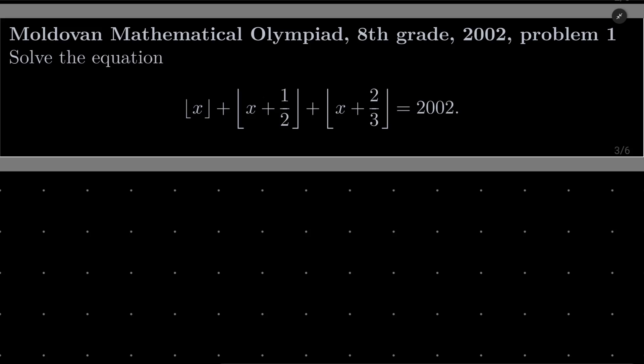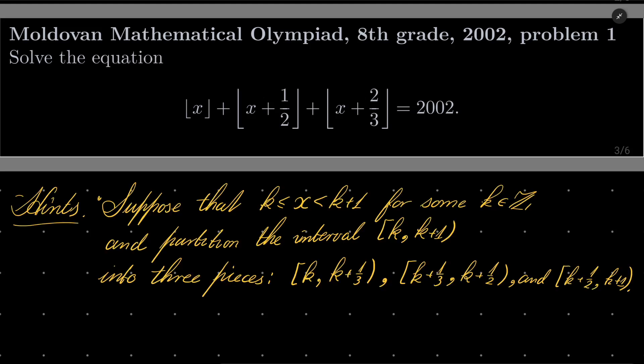So it's a very easy problem, but again, it's given to 8th graders. Here are my hints. Suppose that x is between two consecutive integers k and k plus 1 for some integer k. And basically, you should partition this interval k to k plus 1 into three different pieces.